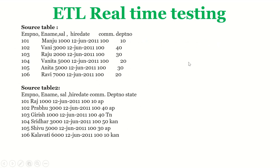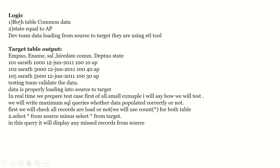Let us start the video. I will show you some slides I made here. This is ETL real-time testing. You can observe the source table containing records like employee number, employee name, salary, hire date, commission, and department number. These are all the data present in source table one. Similarly, source table two contains some data related to employees as well.